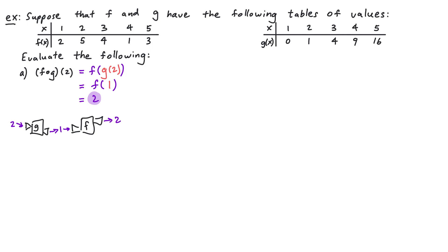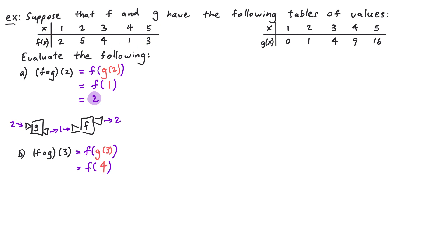Let's take a look at another example. This time we want to evaluate f composed with g of 3 — meaning when we input 3 into the composition, what is the corresponding output. By definition this is f of g of 3. We work from the inside out: starting with g of 3. Looking at the table for g, when we input 3, 4 comes out. So g of 3 is equal to 4. Taking that and plugging it into f: when we input 4 into f, 1 comes out. So our final answer is 1 — that is f composed with g of 3.